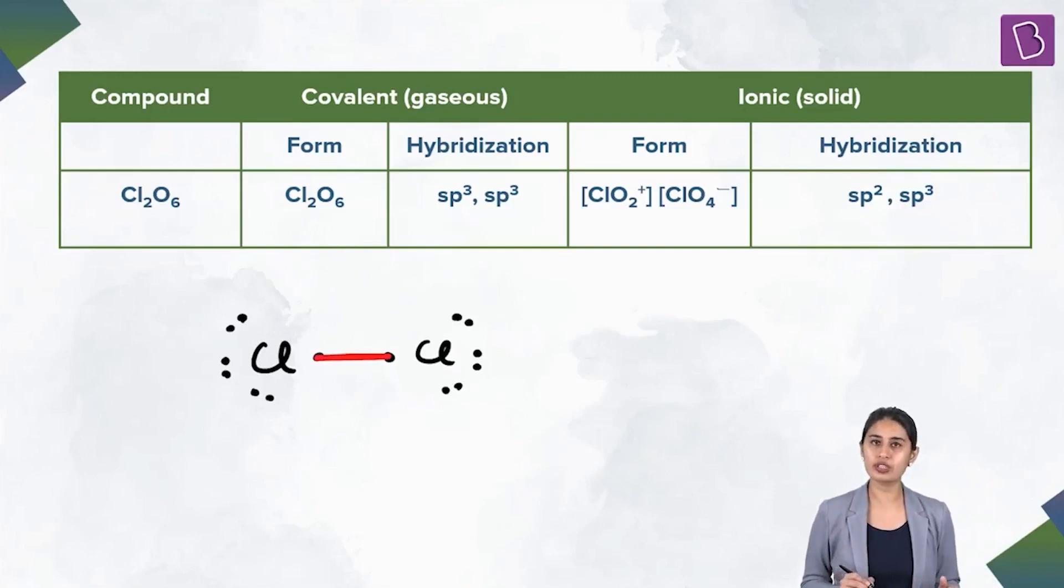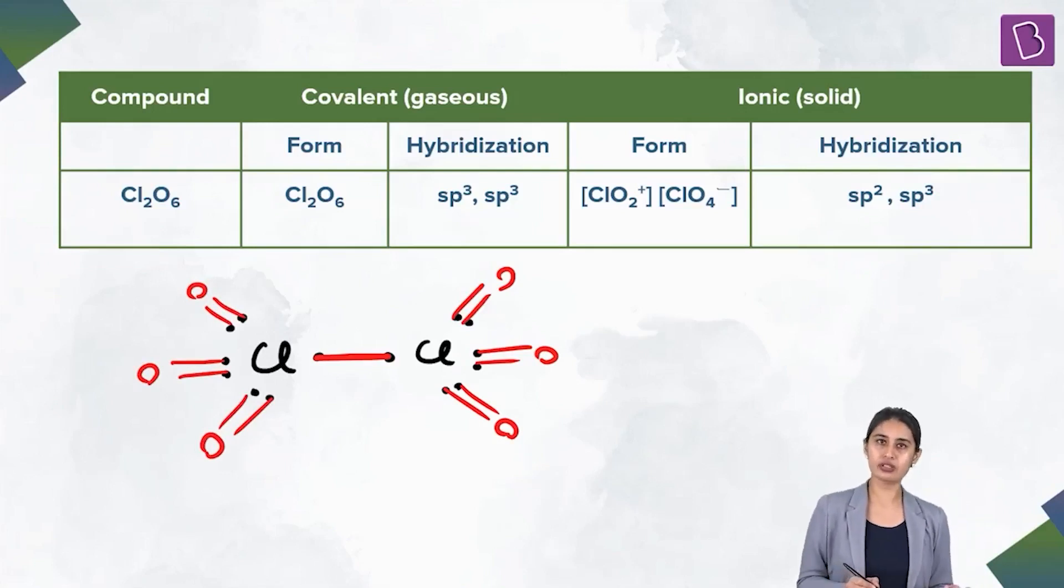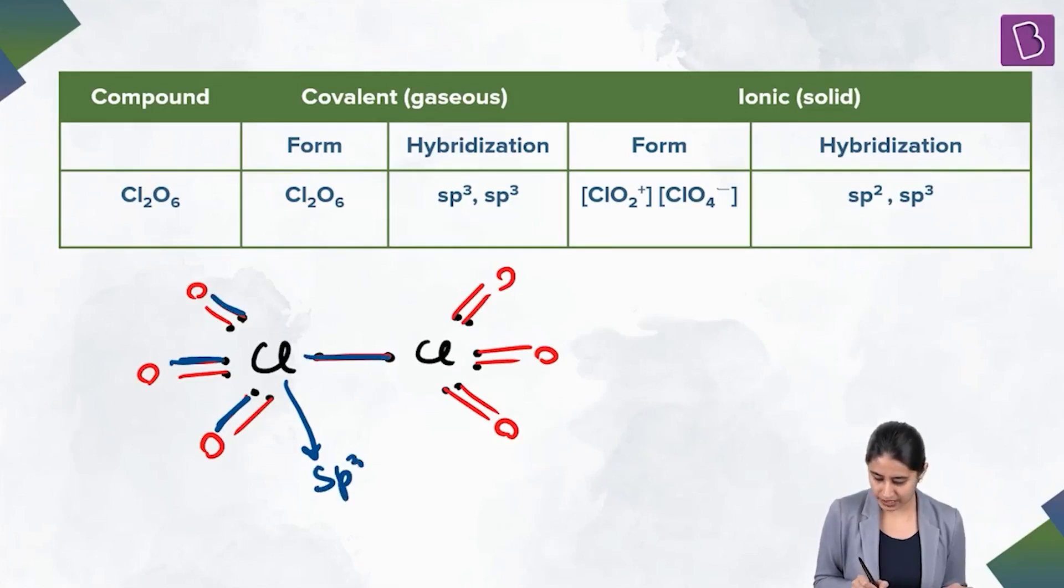The pi bonds, three pi bonds are formed with the three oxygens. Similarly, three pi bonds are formed here and three sigma bonds. We do not take pi bond into account for hybridization. If you take 1 sigma, 2 sigma, 3 sigma and 4 sigma, this is SP3. Similarly, this is also SP3.